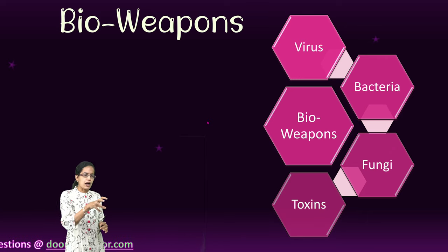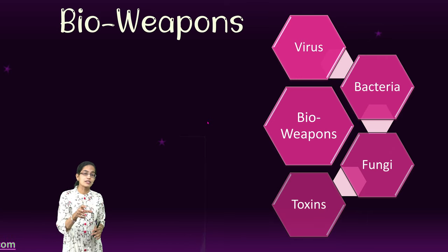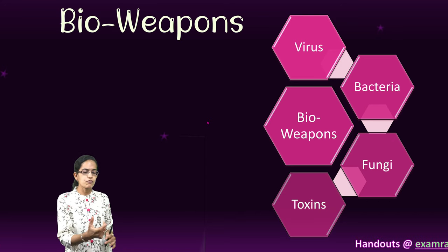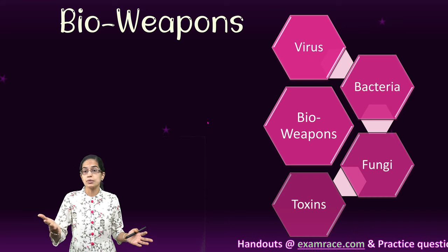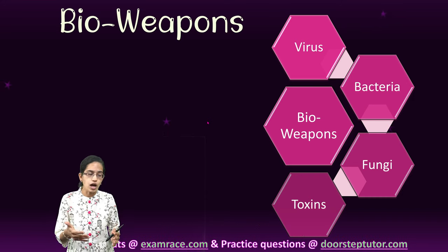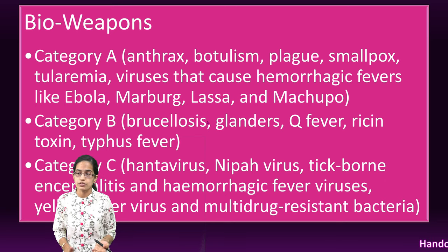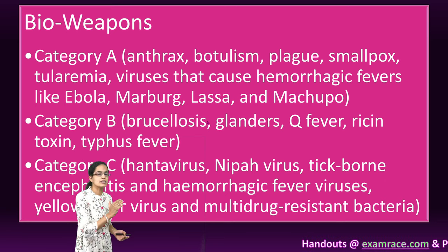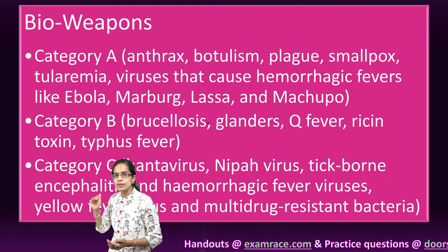If we talk about bioterrorism, bioterrorism could turn into an epidemic. If we have diseases like Lassa fever, which is hemorrhagic in nature, we can have diseases like Ebola, which could be future biological weapons. Bio-weapons can be classified into three categories: Category A, B, and C.